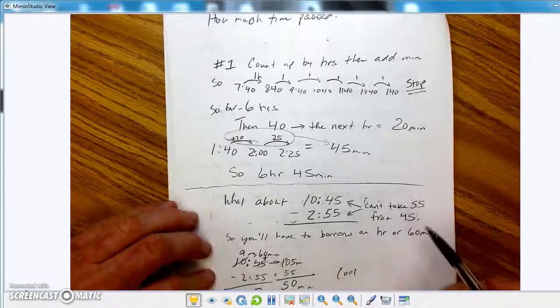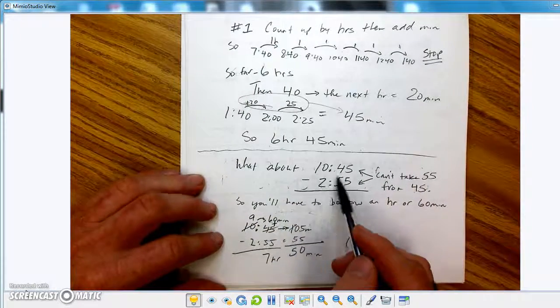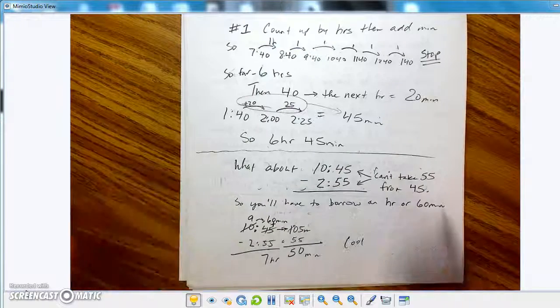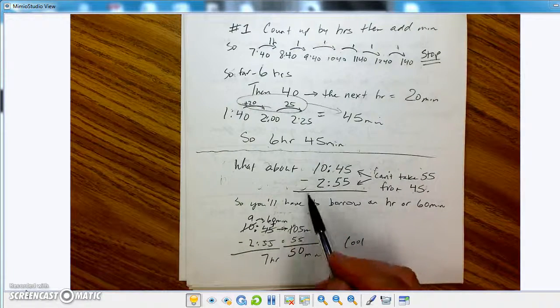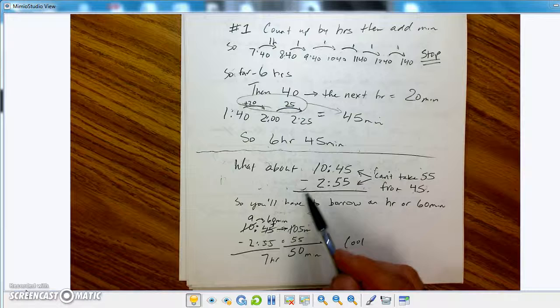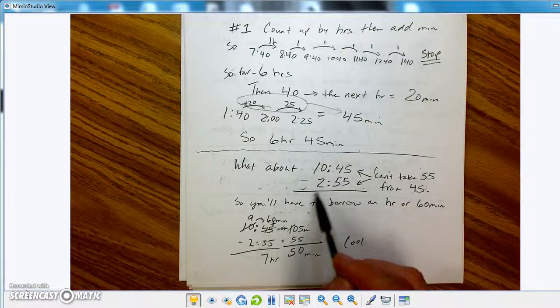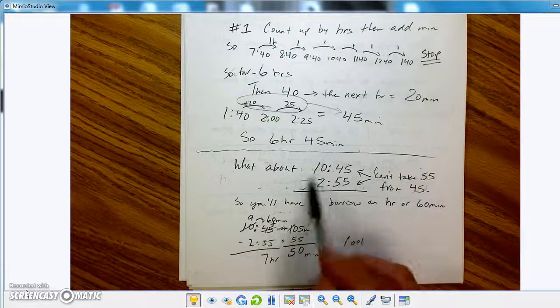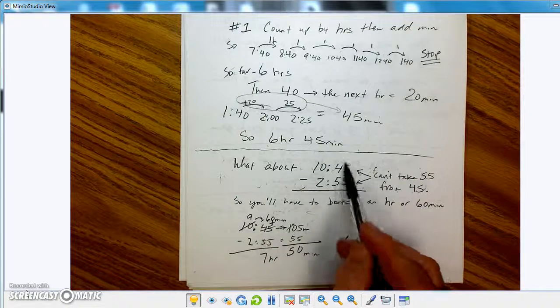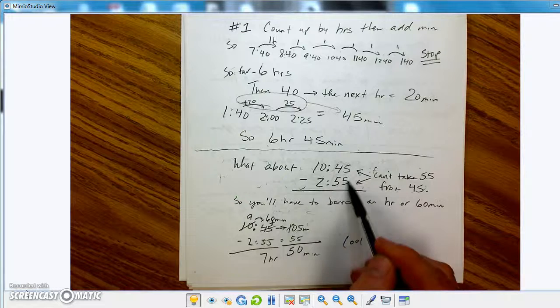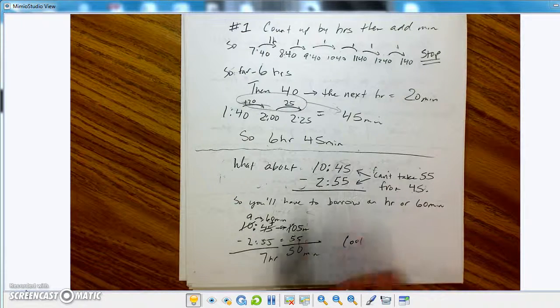What about like a subtraction problem like this? You got 10:45 minus 2:55. You could say something like, you know, how much time has passed. So you could go 10:45 minus 2:45. You're going to take your big number up on top. But see this? Here's the problem. You can't take 45 from 55. Well, sorry. You can't take 55 from 45.